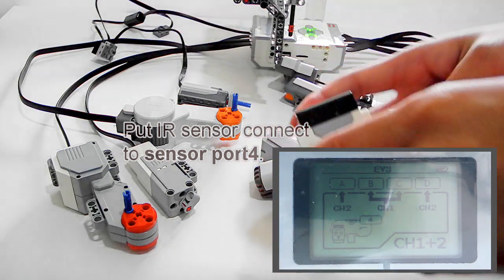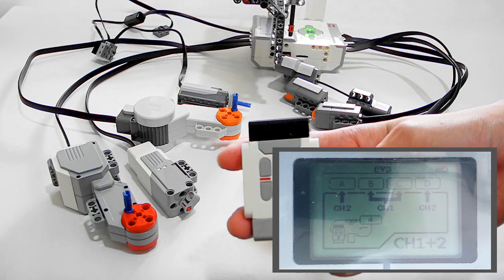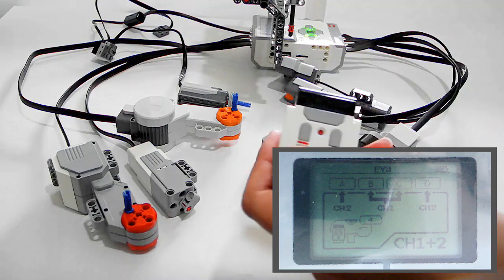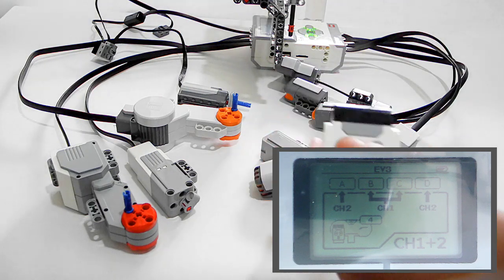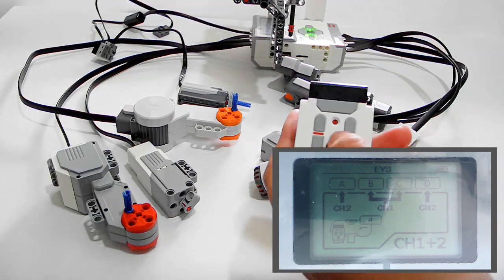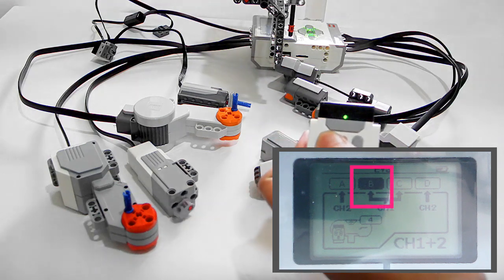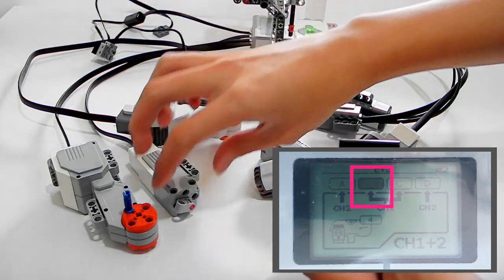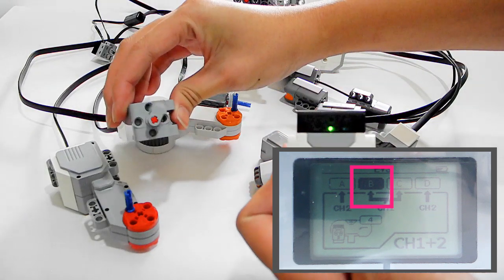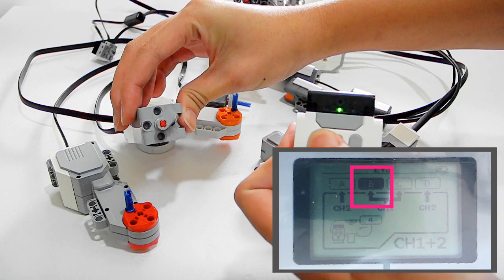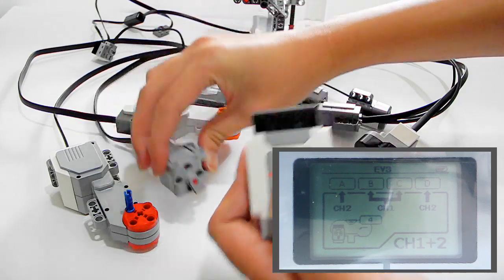And then, you use this remote to demonstrate the motion move. Now, this is channel one. You can see the medium servo motor moving, and this up and down shows two directions.